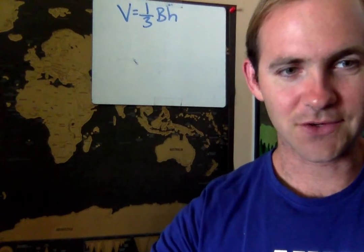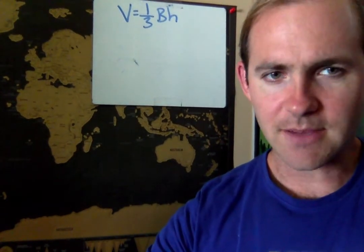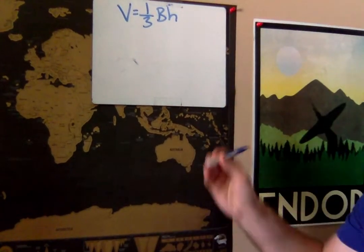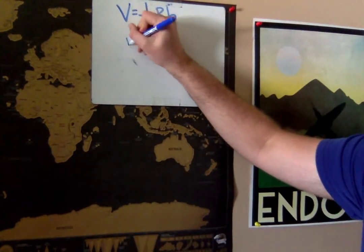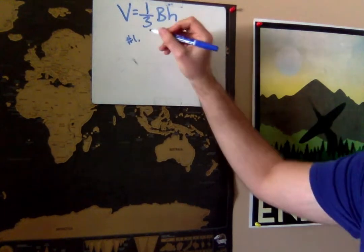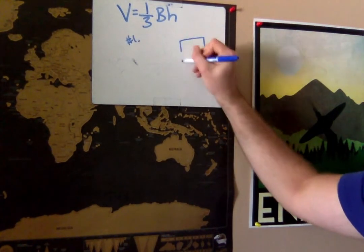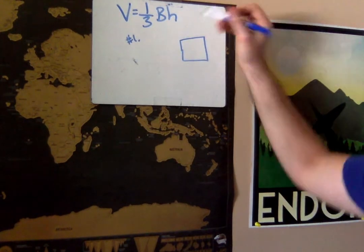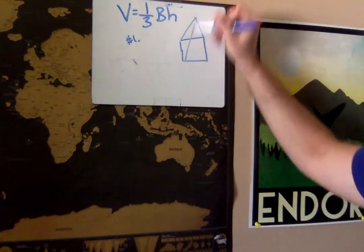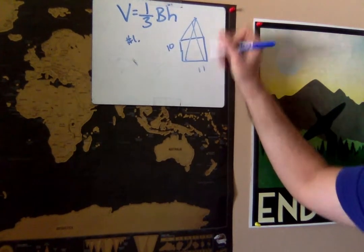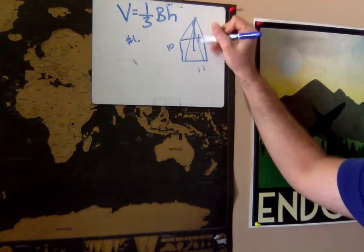Let's take a look at how this is going to work. Starting on page 11, we're going to look at number one. Once again, that's page 11, number one. So number one is a rectangular pyramid. These four go up. This is 10, 11, and the height is 16.